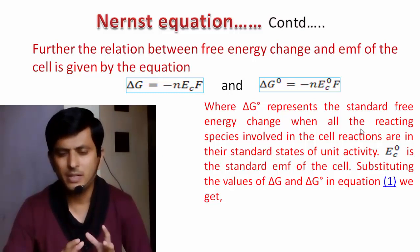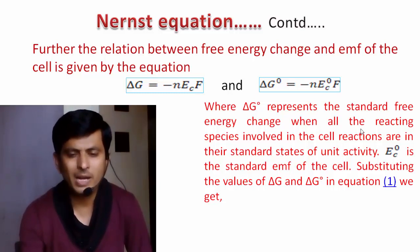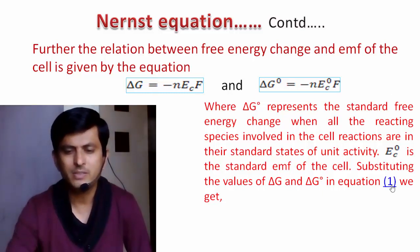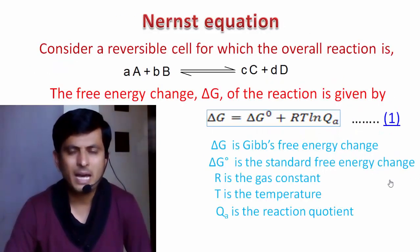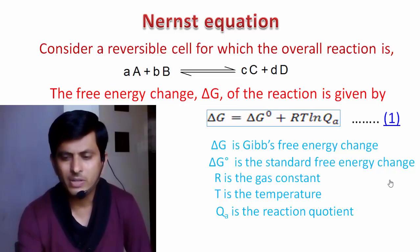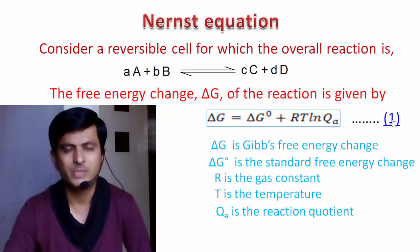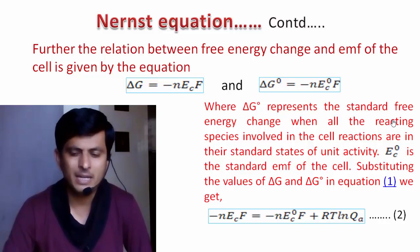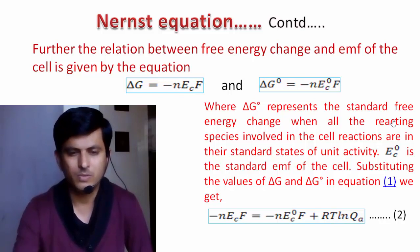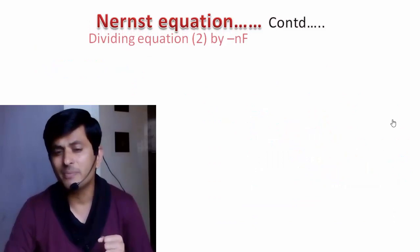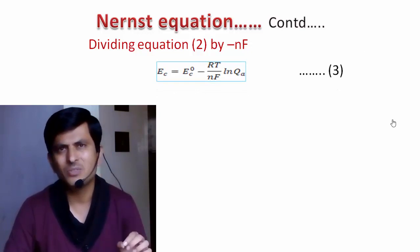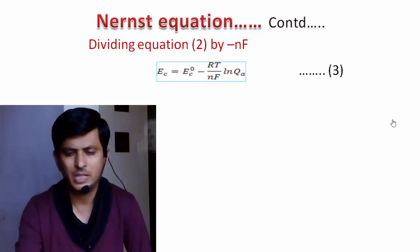Now, substituting these two values of ΔG and ΔG⁰ into Equation 1 — that is, ΔG = ΔG⁰ + RT ln QA — we get: −nECF = −nE⁰CF + RT ln QA. This is Equation 2. Dividing Equation 2 by −nF, we obtain Equation 3: EC = E⁰C − (RT/nF) ln QA.